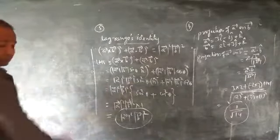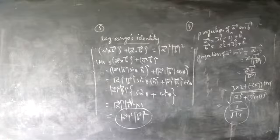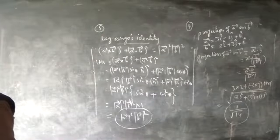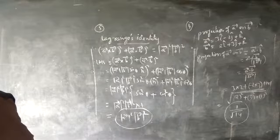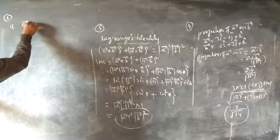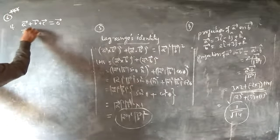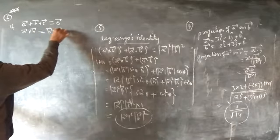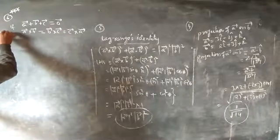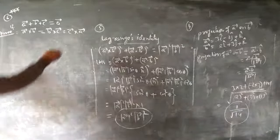These are exam-oriented questions, moving from easier to harder. Question 6: If a + b + c = 0 vector, prove that a × b = b × c = c × a. This is a very good and important question.